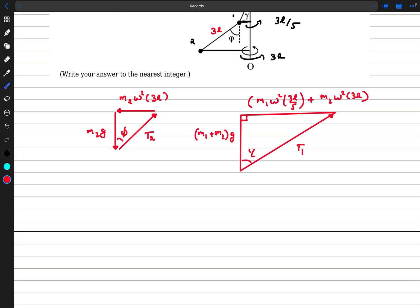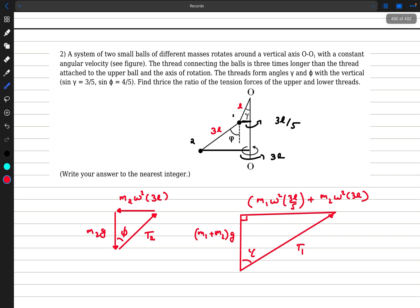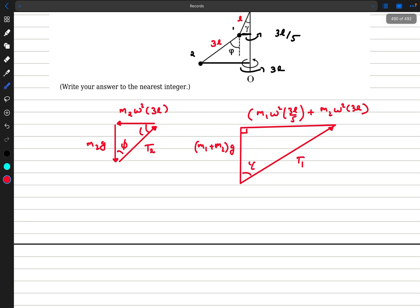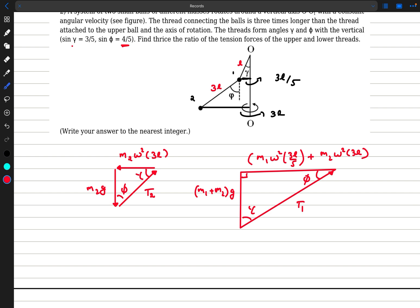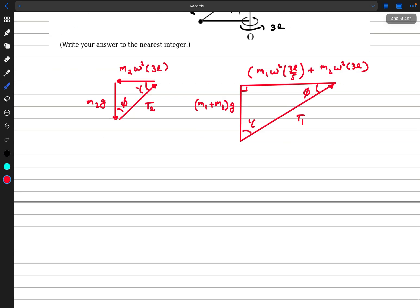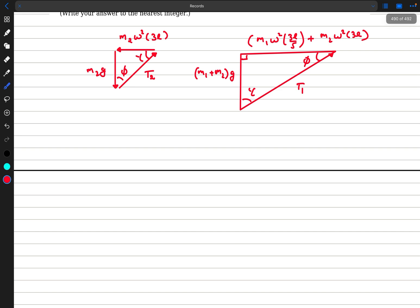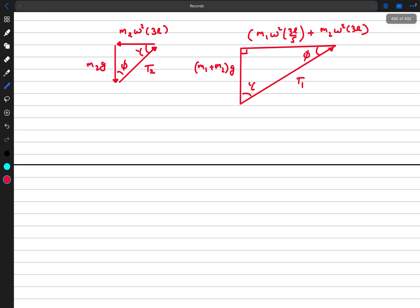Now, another thing you need to observe is that sine gamma is 3 by phi, sine phi is 4 by phi. So if this angle is phi, this angle would be gamma. And if this angle is gamma on this triangle, this angle would be phi. This is because gamma and phi, if you add them together, it will be 90 degrees. So now the thing is, we have two similar triangles. Now it's just a bit calculative. So the thing is, if you take tan phi in the first triangle, on the left side, we have 3 omega squared L by g. And on the right hand side, this is equal to tan phi, which is 4 by 3.